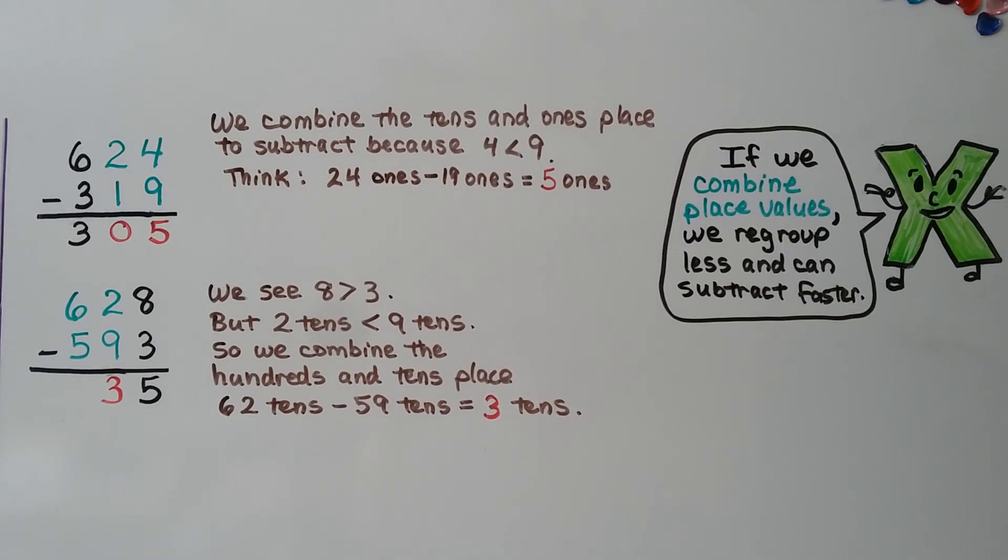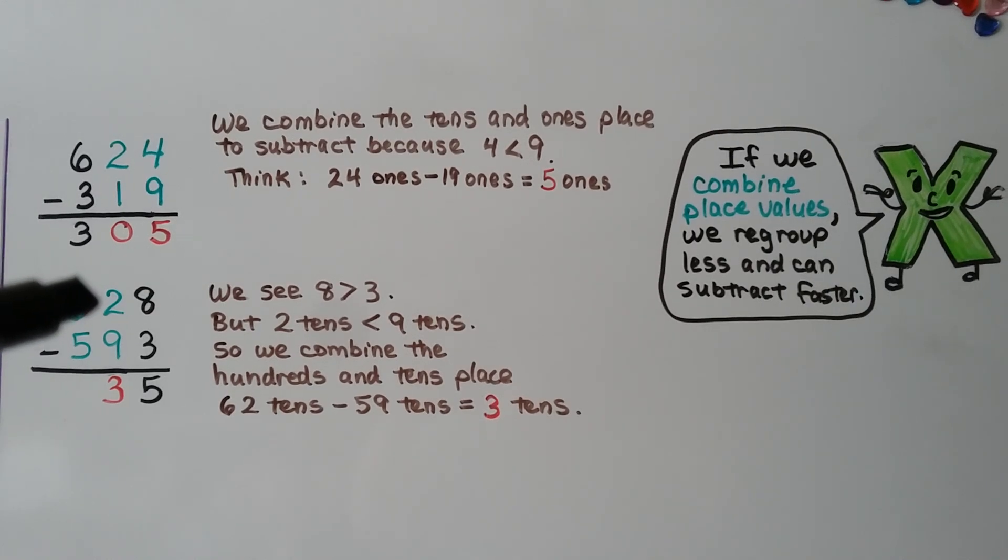And we know we can combine the tens and ones place to subtract because this 4 is less than the 9. So we can think 24 ones minus 19 ones equals 5 ones. We don't have any tens, so we put a 0 there. Then we just do 600 minus 300 is 300. For this one, we can do 8 minus 3 equals 5. But we see that 2 tens is less than 9 tens, so we know we can combine the hundreds and tens place as 62 tens and 59 tens to get 3 tens.